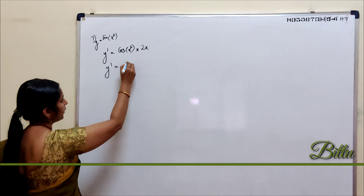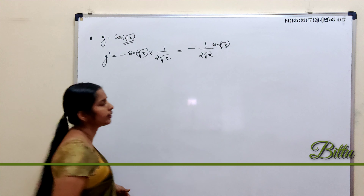Consider the function y = cos(√x). The derivative of cos θ is −sin θ, and in place of θ it is √x. Applying the outer derivative and then multiplying by the derivative of √x, which is 1/(2√x), we get y' = −sin(√x) · 1/(2√x). Hence y' = −sin(√x) / (2√x).